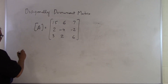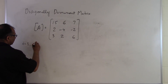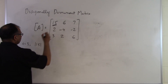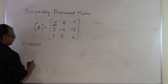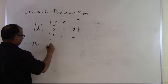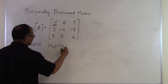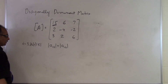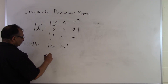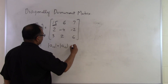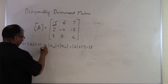For row 1 (i = 1), the absolute value of the diagonal element a_11 is 15. The sum of the absolute values of the remaining row elements is |a_12| + |a_13| = |6| + |7| = 13. Since 15 ≥ 13, the inequality is satisfied for row 1.